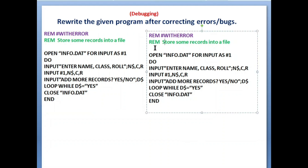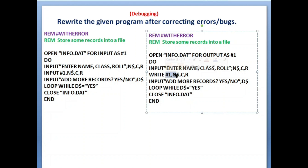The program says 'store some records into a file.' The word 'store' means we should use OUTPUT mode. In output mode, after taking input from the user, we use the WRITE statement to store data into the file. Hashtag 1 in the write statement represents the file 'info.dat' opened with that number. Use the file name only once in the OPEN statement; after that, use hashtag 1 throughout.